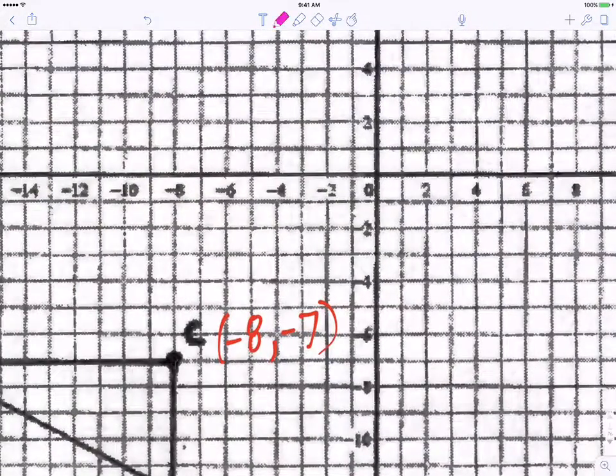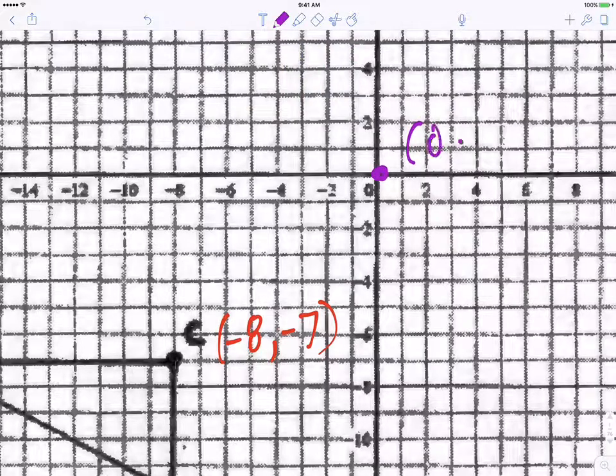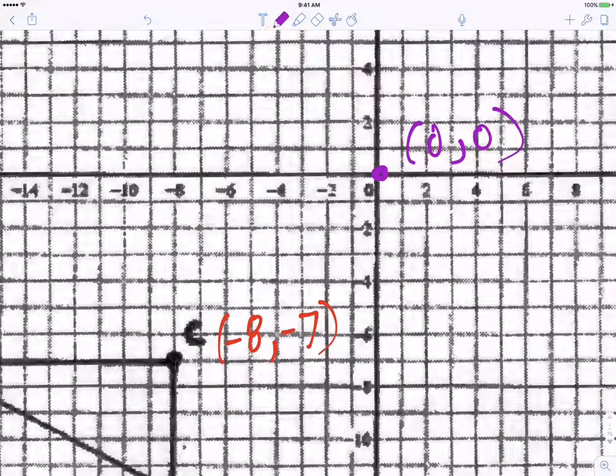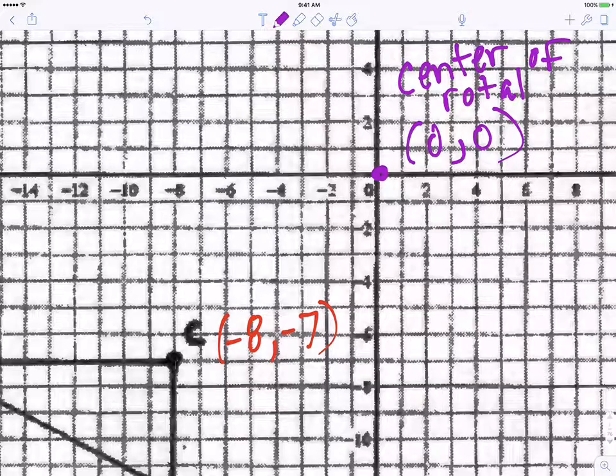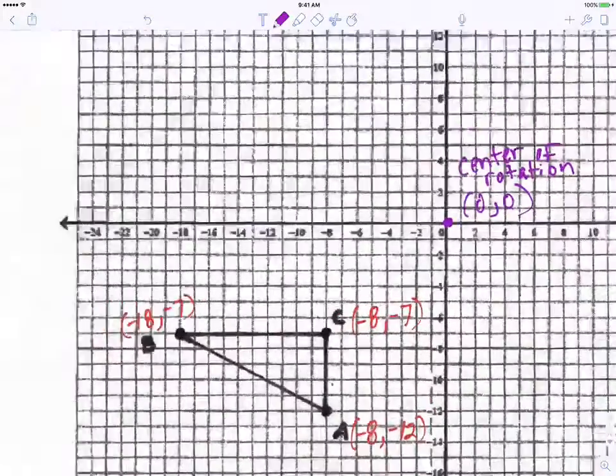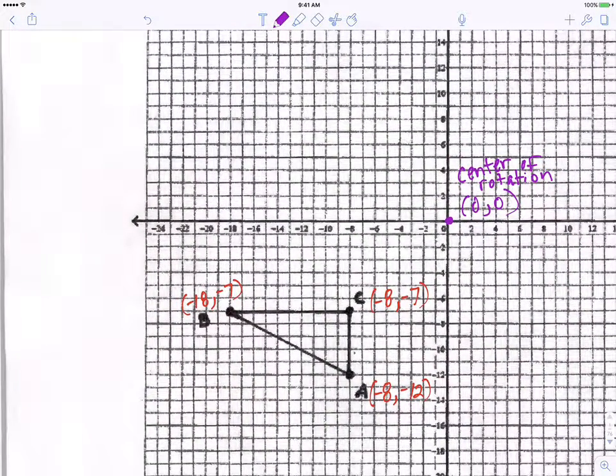Now the origin is 0,0. And that's called the center of rotation. That's what that's called, center of rotation. And so now what we do is, let's pick a point. Let's pick a point here. And let's say I start with point C.